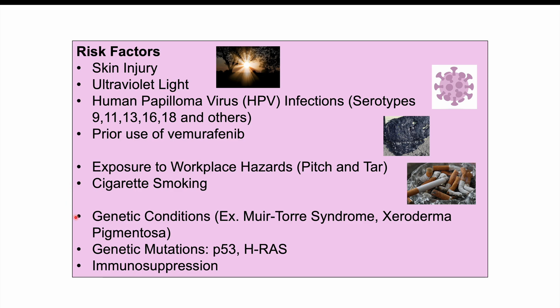Cigarette smoking is another risk factor. Certain genetic conditions — examples include Muir-Torre syndrome and Xeroderma pigmentosum — are also risk factors. Muir-Torre syndrome is similar to Lynch syndrome, involving increased risk of colon cancer along with some skin lesions including keratoacanthoma. Genetic mutations in P53 or HRAS have been associated with this condition as well, and being immunosuppressed — whether from severe diabetes, HIV/AIDS, or immunosuppressive agents — can also increase the risk.